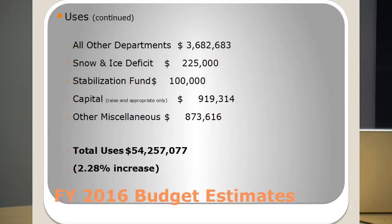All other departments — assessors, the clerk's office, the collector, information technology, accounting, selectmen, library, et cetera — account for $3.6 million in expenses. We have a significant snow and ice deficit this year after the winter we just experienced. A snow and ice deficit is the amount it costs us to clear snow and ice throughout the winter in excess of what was appropriated at last year's annual town meeting. This year, we are recommending carrying forward $225,000 of the current fiscal year's snow and ice deficit into next year. It is the only debt we are allowed under state statute to carry forward into the next fiscal year.